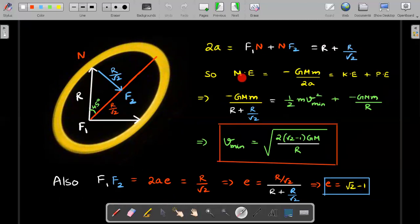So mechanical energy in that minimum condition would be minus GMM by 2A, which also should be KE plus PE, right? KE is related to half MV minimum square that you have to throw. PE is always minus GMM by R because you're throwing it at a distance R from the center of Earth. So I've substituted the value of 2A as R plus R by root 2 here. So rearranging you'll nicely get the value of minimum speed equal to this particular expression.